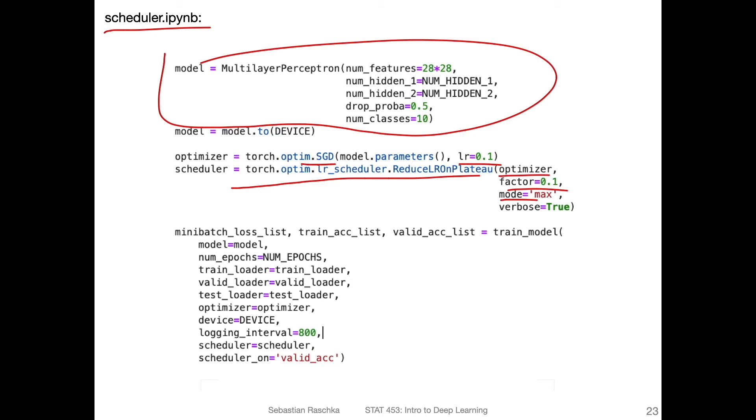So I usually like to work with accuracy instead of error. Because it's more positive, it sounds better, like having a high accuracy sounds better than having a low error for some reason. I like accuracy. It's maybe also because in the context of scikit-learn, everything is an accuracy. And I really like scikit-learn. It's for those who haven't taken 451, it's a package for traditional machine learning, which has a very nice API.